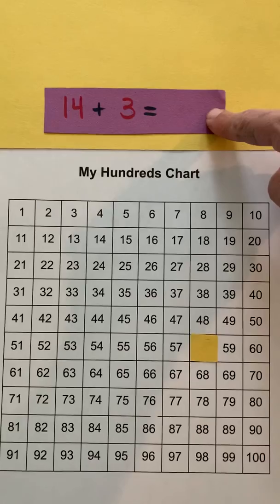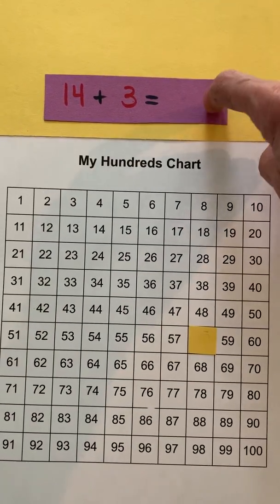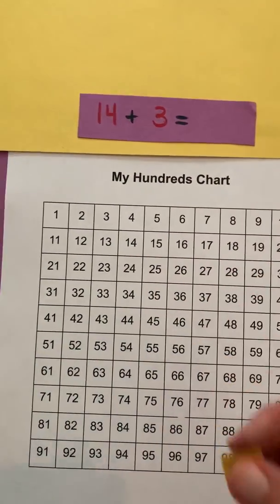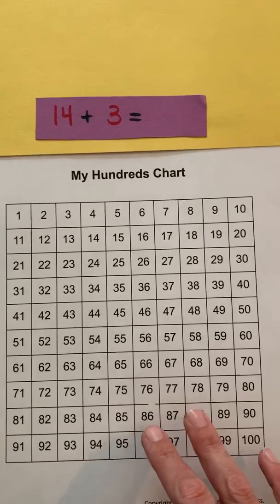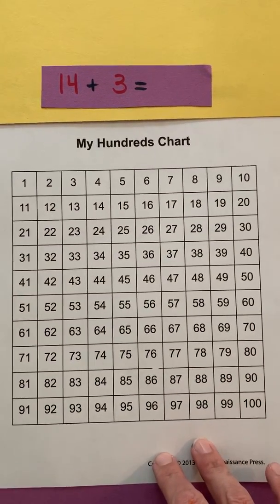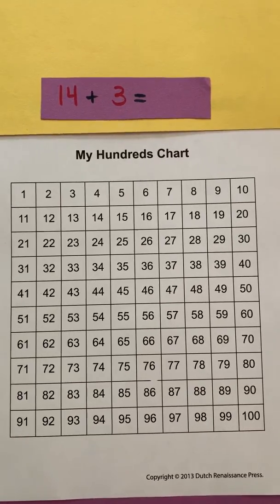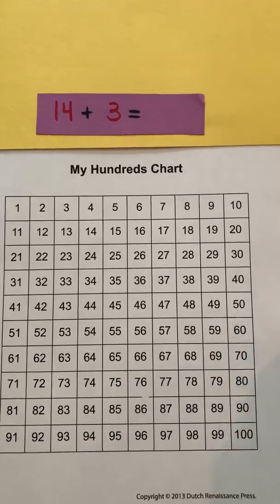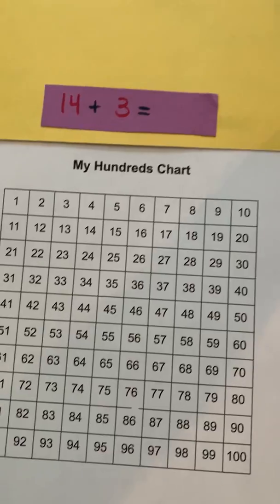What we're going to do now is we're going to add a two-digit addend plus a one-digit addend to get the sum. So what I did is I printed off a hundreds chart. If you have one, you can definitely do that. You could definitely draw your own as well to do that.